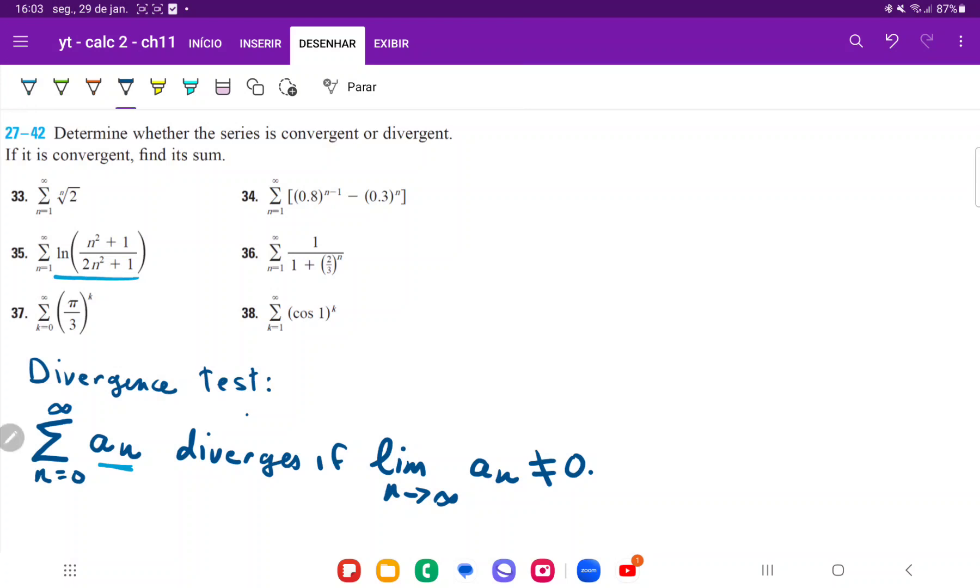So what we're going to do here is we're going to take the limit of this stuff that's within the summation symbol. So we're taking the limit as n goes to infinity of ln of (n squared plus 1) divided by (2n squared plus 1).